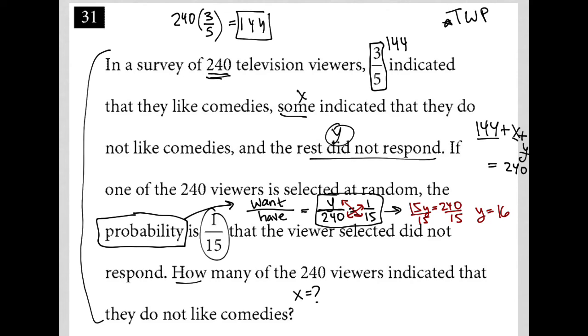So now back to this equation here, which I'll write clearer. 144 plus X plus, now I know the non-responders were 16. I know that altogether there were only 240 people. So I can do the math on this. 144 plus 16, well, that's 160. So I have 160 plus X equals 240.